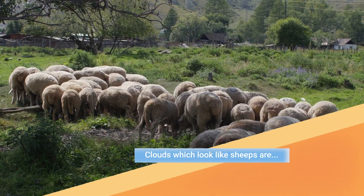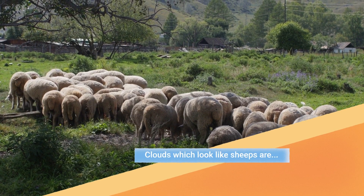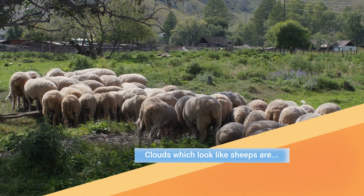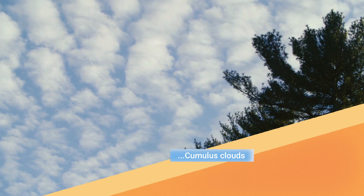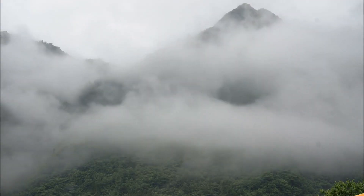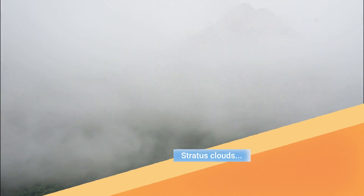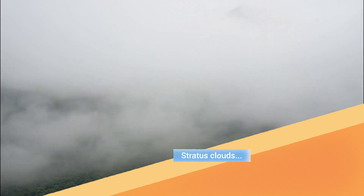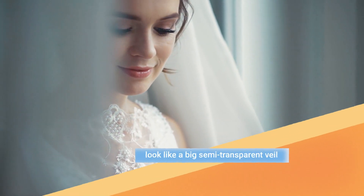Clouds which look like sheep are cumulus clouds. Stratus clouds look like a big veil.